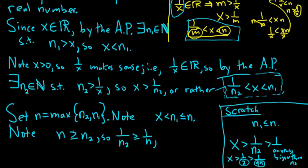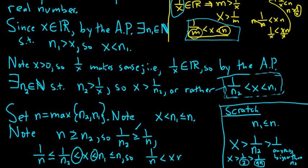Writing this backwards, this says that 1 over n is less than or equal to, reading it backwards, 1 over n2, which is less than x, which is less than n1, which is less than or equal to n. That is beautiful. So this means that 1 over n, take the strongest inequality, take the strong one, less than x, which is less than n.